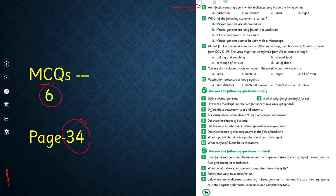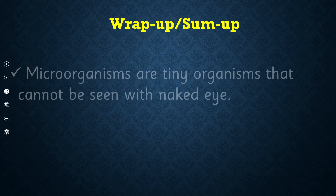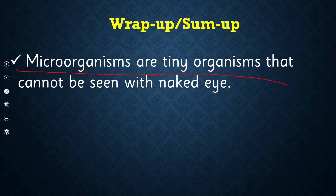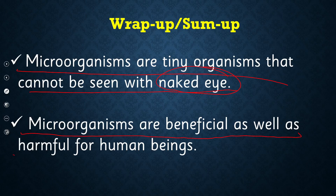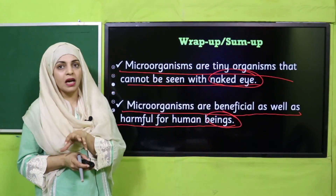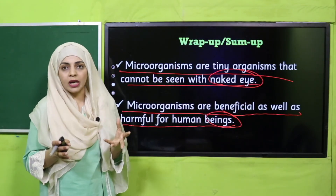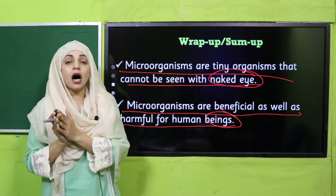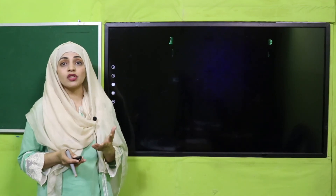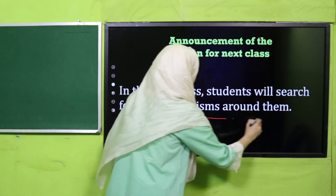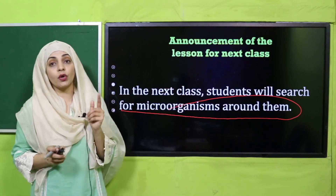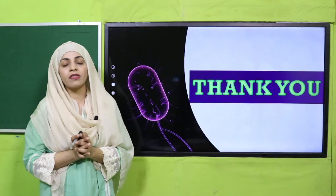My dear students, what have we learnt today? Microorganisms are tiny organisms that cannot be seen with the naked eye, and they are beneficial as well as harmful for human beings. We learnt to define them, describe them, where they are present, how you can study them, and what their uses and harms are. In the next lecture, all students will search for microorganisms around them as a practical activity. Until then, keep everybody around you safe. Have a good day. Thank you so much. Allah Hafiz.